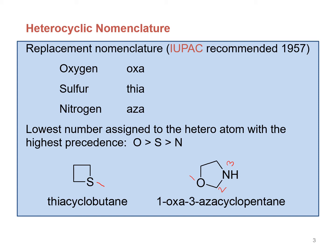If more than one hetero atom is present in a heterocyclic compound, we start numbering from oxygen first. The preference order is: oxygen first, then sulfur, then nitrogen. For example, this structure is a derivative of cyclopentane containing two hetero atoms — one oxygen and one nitrogen — so we start numbering from oxygen.